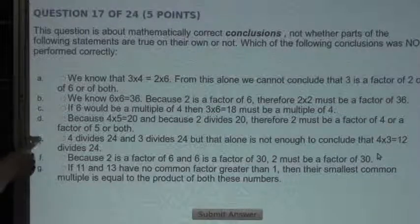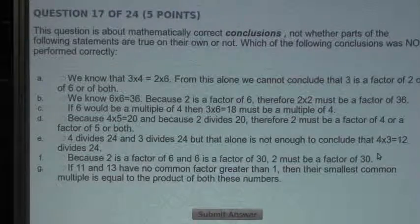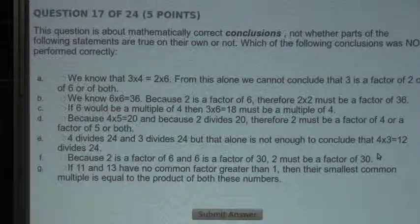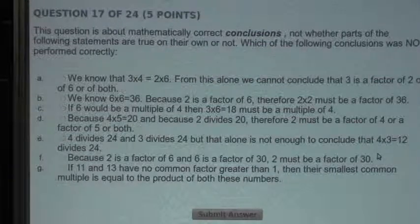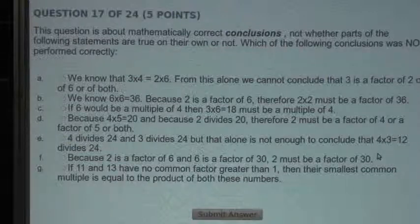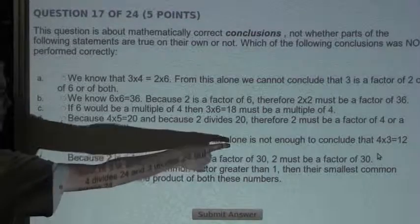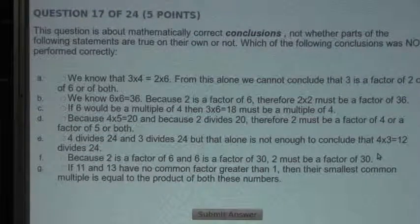Now let's look at Statement E. 4 divides 24 and 3 divides 24. But that alone is not enough to conclude that 4 times 3 equals 12 divides 24. Well, this is correct, because if we take two higher numbers, like 8, which divides 24, and 12, which divides 24, when you multiply them together, you would have 8 times 12 is 96, which is not a factor of 24. So Statement E would be correct because it says that alone is not enough to conclude that 4 times 3 is 12 divides 24.